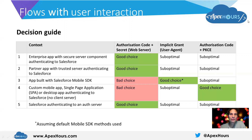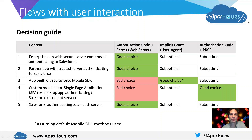Firstly, if we're working with an enterprise app which is authenticating to Salesforce and that application has a web server element that is able to protect a client secret or a signing key, the web server flow — or the authorization code with secret flow — is going to be the best choice. We can make use of this app's ability to protect the secret together with a secure back channel, which provides additional benefits over a browser-based interaction for sharing access tokens. This makes for the most secure version of OAuth for this context.